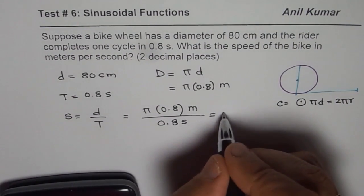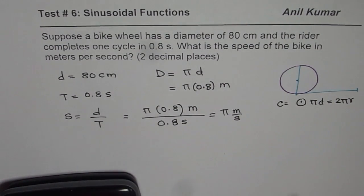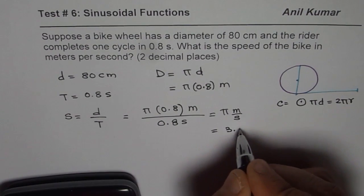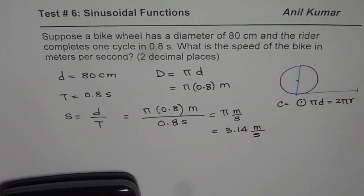So it is π meters per second. To two decimal places, it is 3.14 meters per second. That is our answer for the given question. Thank you.